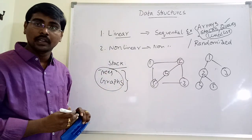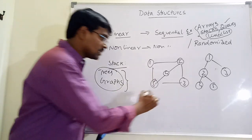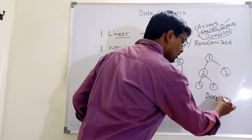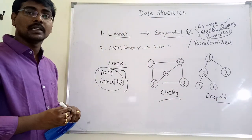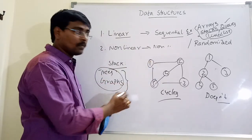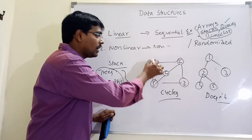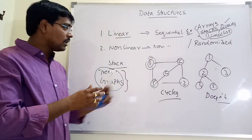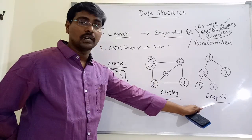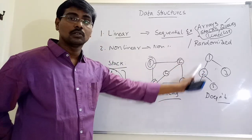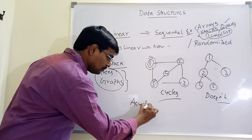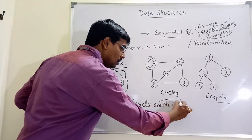A cycle means we start at vertex 1, traverse through other vertices, and finally reach back to vertex 1 — that is a cycle. Whenever we start at a vertex and finally return to the starting vertex, that is called a cycle. But in a tree, starting at vertex 1, we do not return to vertex 1 after visiting all other vertices. Simply put, an acyclic graph is called a tree.